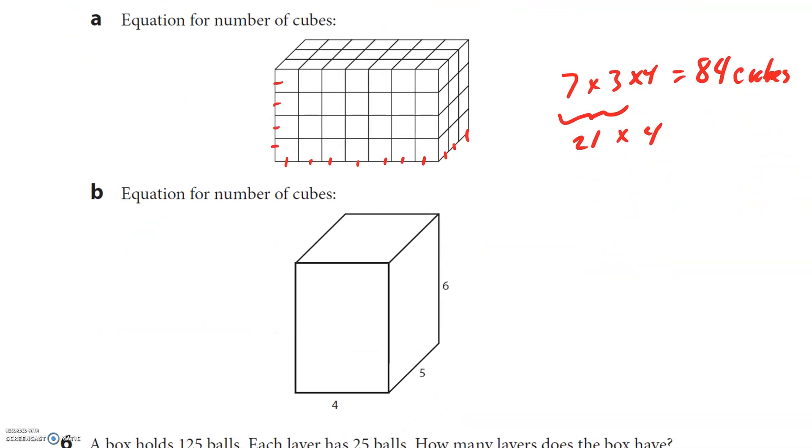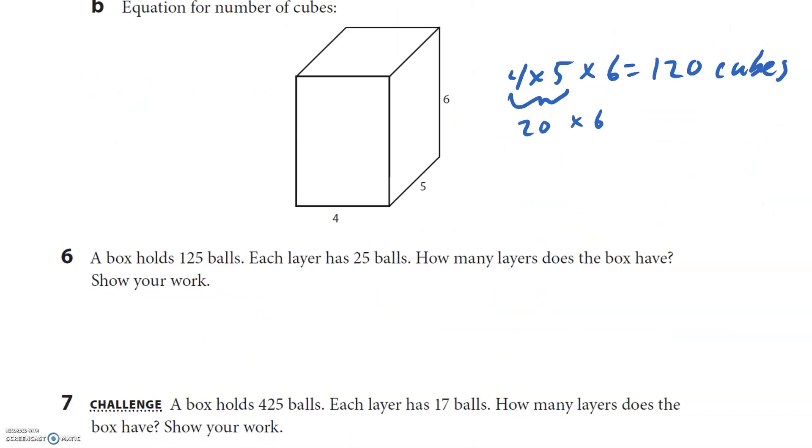Oh, they tell us the dimensions. They didn't draw it, they just tell us the dimensions. So the base is 4 × 5 and the height is 6. So this right here is 20 × 6. Well, 2 × 6 × 10. So 2 × 6 is 12 times 10 is 120 cubes. So there's my equations.